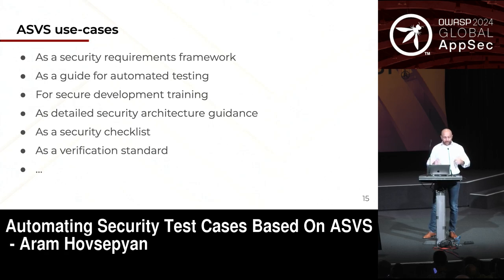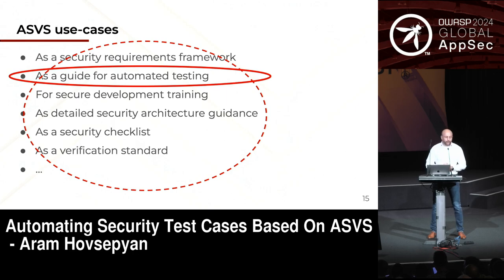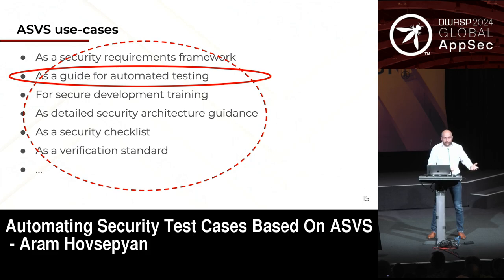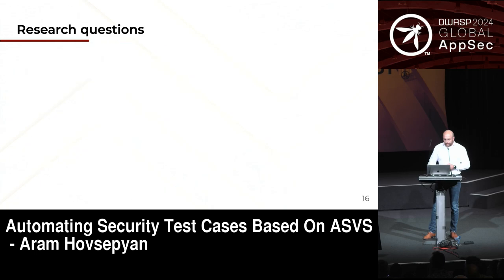ASVS has many use cases, and we're going to focus on using it as a guide for automated testing. My claim is also that once you do that, you'll pretty much cover other use cases automatically. For example, secure development training — once you mandate the QA and dev team to write test cases for ASVS requirements, they will learn about it anyway. They'll have to write a test case for checking password requirements based on ASVS, and they'll understand what it means. It's not that hard.